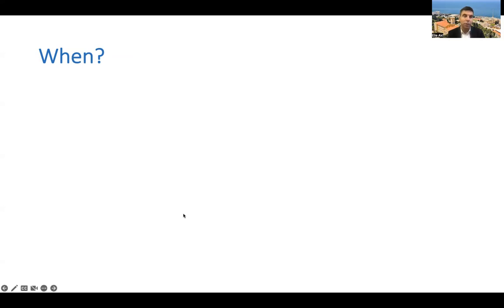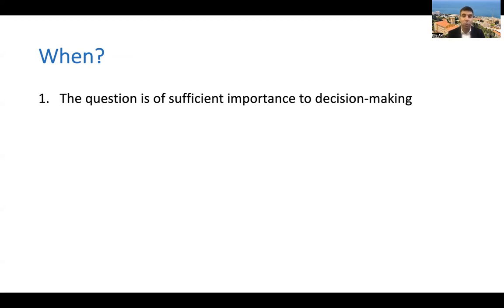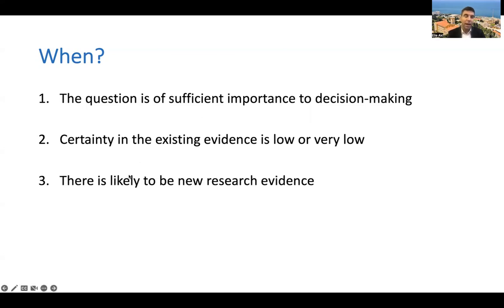In terms of the when, we had defined three conditions for taking a systematic review into a living mode. One is that the question is of sufficient importance to decision making. This is exactly why living systematic reviews became a la mode during the pandemic, because policymakers had so many questions and wanted quick answers. The second condition is that the certainty in the existing evidence is low or very low, meaning that adding new evidence will likely improve the certainty. And three is that there is new research evidence in the pipeline.